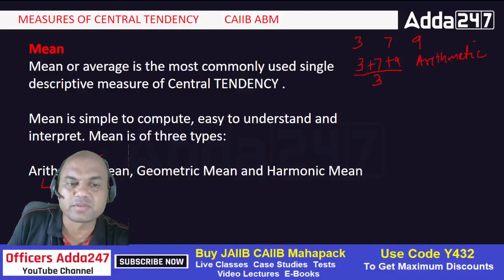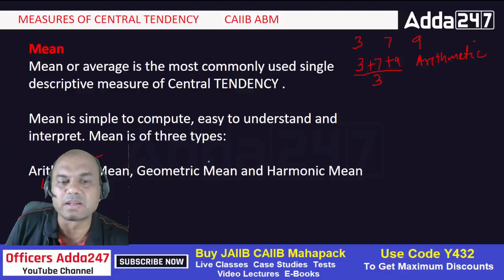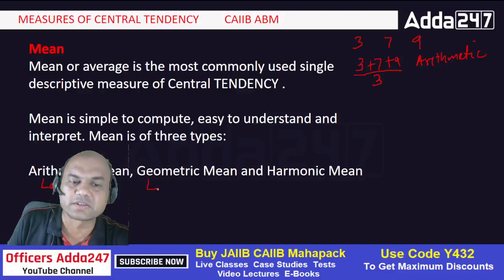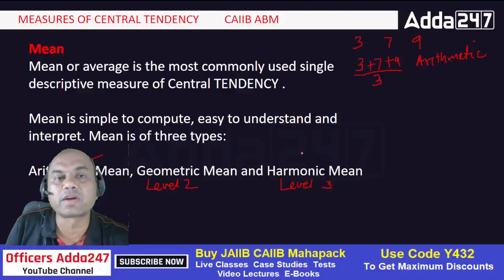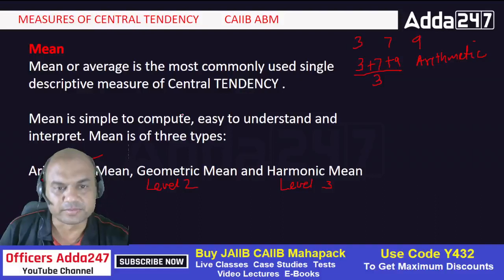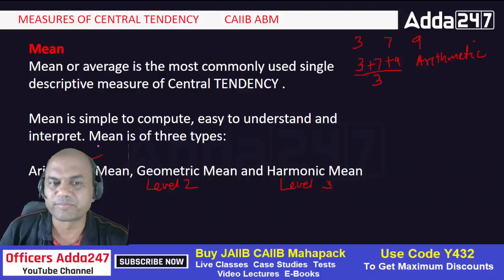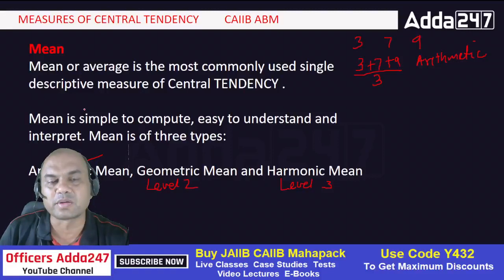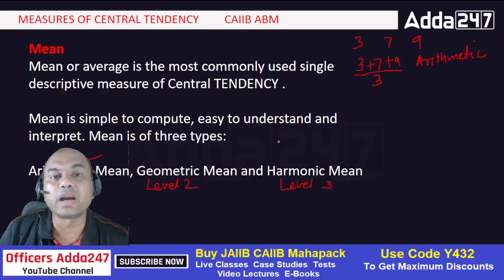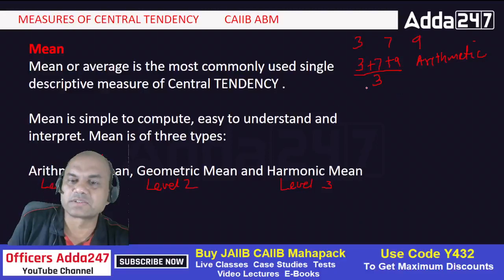Think of it as levels — arithmetic mean is level 1, geometric mean is level 2, and harmonic mean is level 3. Harmonic mean is the most difficult because it is essentially the reverse of arithmetic mean. Mean overall is simple to calculate and easy to understand and interpret compared to the other types.